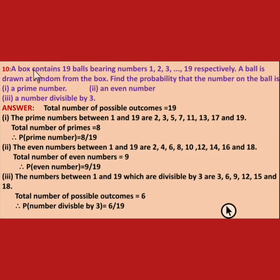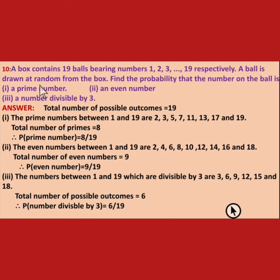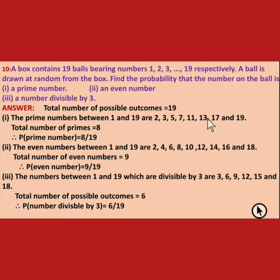Next is tenth. A box contains 19 balls bearing numbers 1 through 19. A ball is drawn at random. Find the probability that the number is a prime number, an even number, or a number divisible by 3. Total outcomes are 19. Prime numbers between 1 and 19 are: 2, 3, 5, 7, 11, 13, 17, and 19 — that is 8 prime numbers. Probability of prime numbers is 8 upon 19.